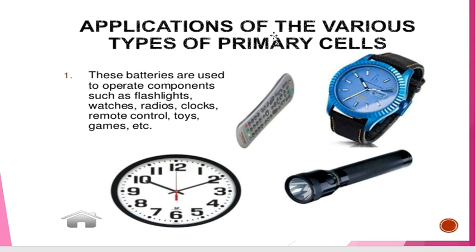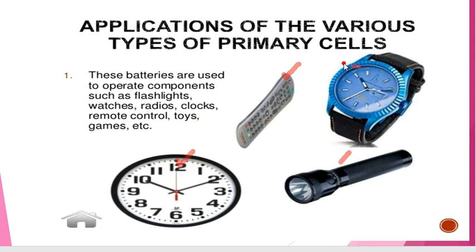Here are some of the applications of the various types of primary cells. Batteries — which is a combination of two or more cells — are used to operate components such as flashlights, watches, radios, clocks, remote controls, toys, games, etc. As you can see, in remote controls, clocks, torches, and watches, we use the primary cells.